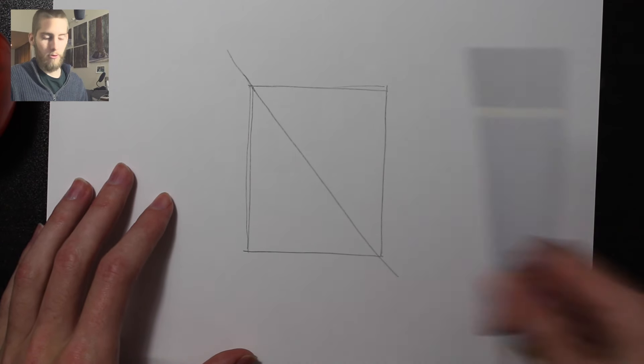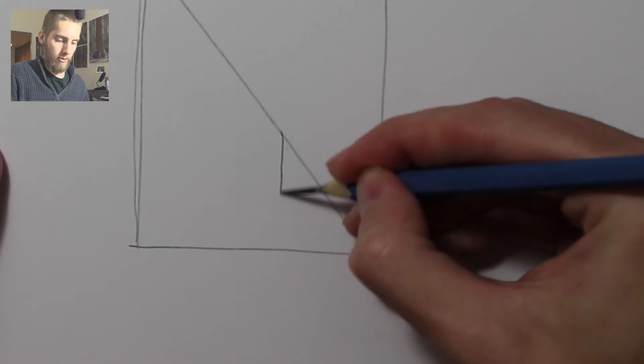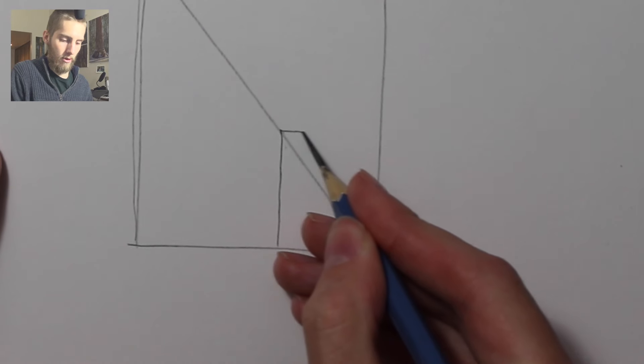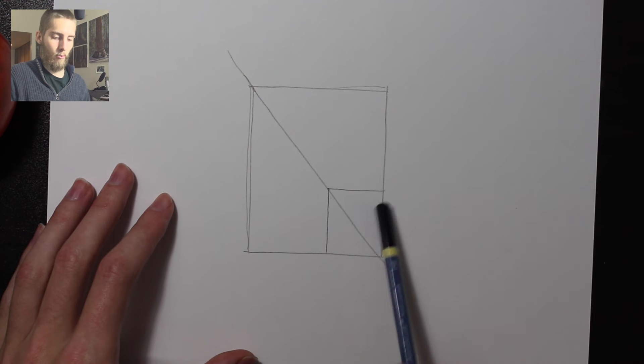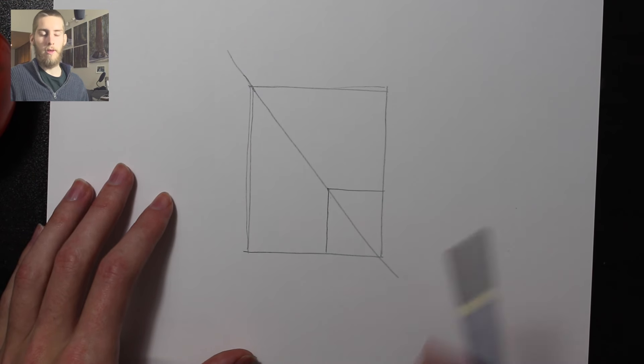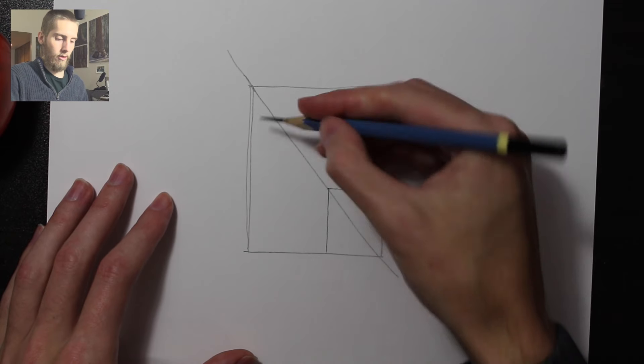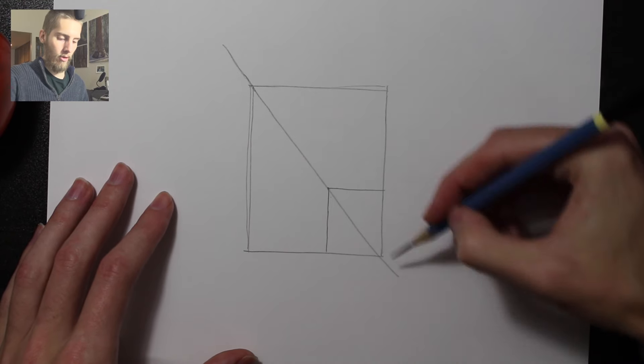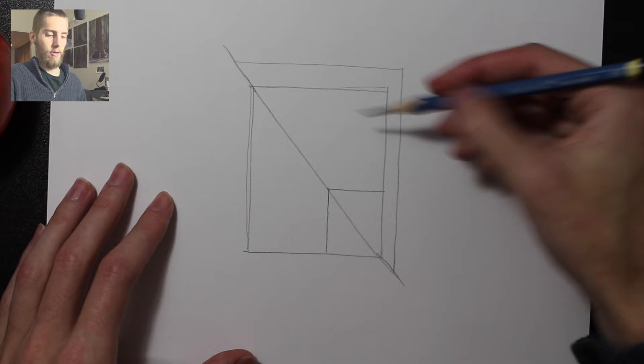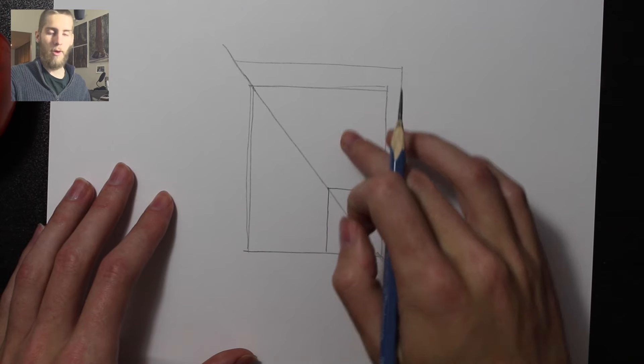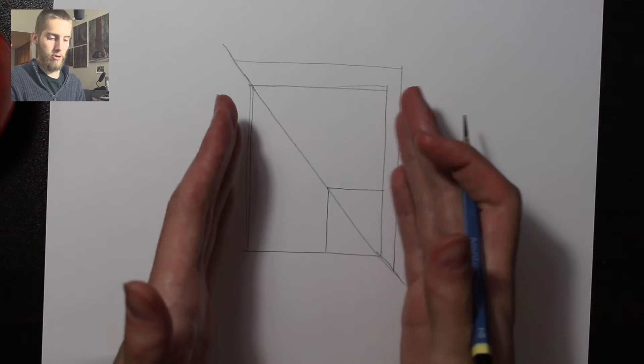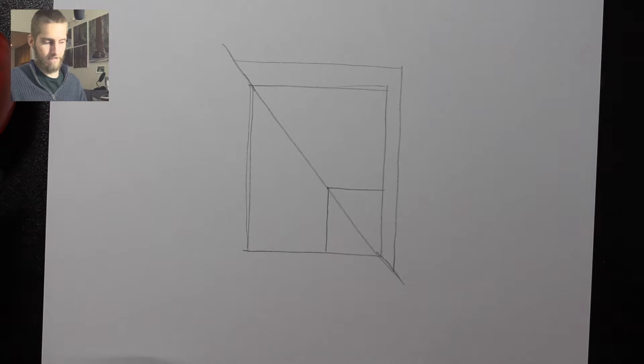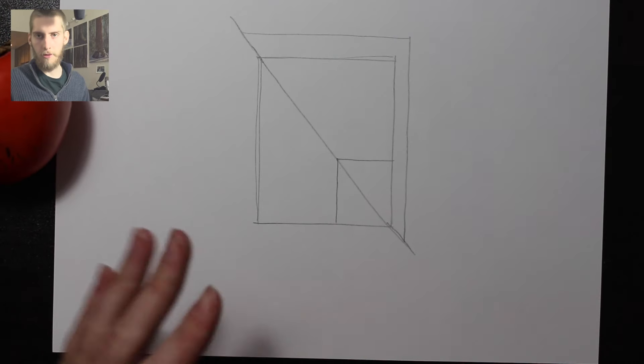That's all due to this diagonal. So if we draw this rectangle smaller and maintain that same height to width ratio or diagonal, it's going to be in proportion. If we did it larger and extend this angle out, it's still in proportion to the original aspect ratio of the object or rectangle. That's really the theory.